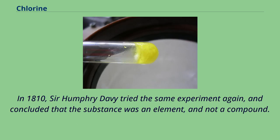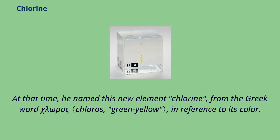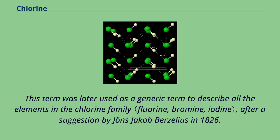In 1810, Sir Humphrey Davy tried the same experiment again and concluded that the substance was an element, and not a compound. He announced his results to the Royal Society on 15th of November that year, and named this new element chlorine, from the Greek word chloros, in reference to its color. The name halogen, meaning salt producer, was originally used for chlorine in 1811 by Johann Salomo Christoph Schwiger, and was later used as a generic term for all elements in the chlorine family, after a suggestion by Jöns Jacob Berzelius in 1826.